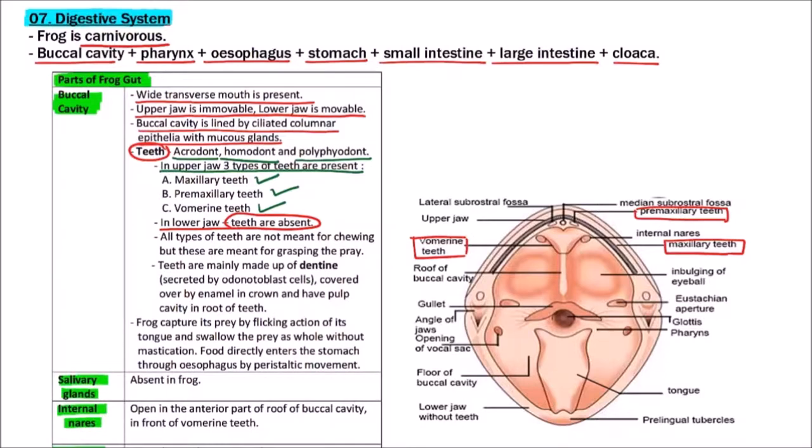In lower jaw, teeth are absent. All types of teeth present in the buccal cavity are meant for making grip over the prey. Teeth are not meant for chewing but for grasping the prey. Teeth are mainly made of dentine covered by enamel in crown and have pulp cavity in the root. Frogs capture prey by flicking action of its tongue and swallow the prey whole without mastication. Since the lower jaw has no teeth, upper jaw teeth are just for grasping the prey.